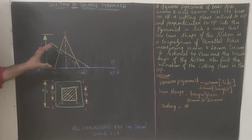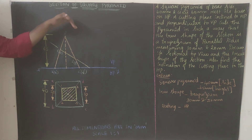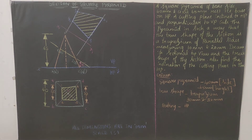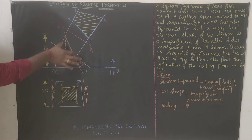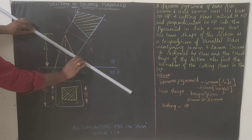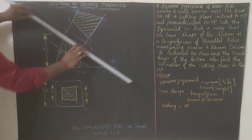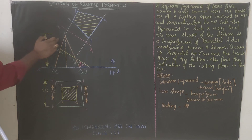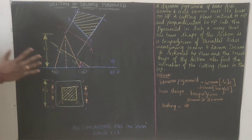We now have four cutting points: 1-dash, 2-dash, 3-dash, 4-dash. Draw the cutting plane through these points in the front view. Next, draw another reference line X1Y1 parallel to the cutting plane, away from both the front view and the top view. Distance and length do not matter — it just needs to be clear of the existing views.